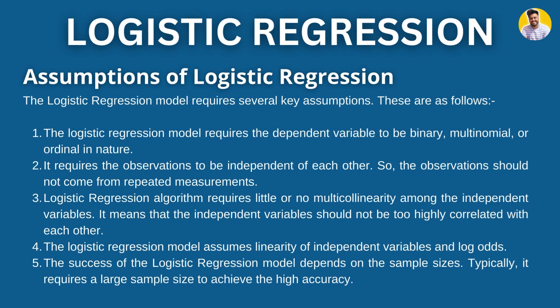What are the assumptions of logistic regression? We also know the assumptions of linear regression, and they can be very similar. Logistic regression requires the dependent variable to be binary, multinomial, or ordinal in nature. It requires the observations to be independent of each other, so there should be no multicollinearity. Logistic regression also assumes linearity of independent variables and the log-odds. Its success depends on sample size — it requires a very large sample size to achieve high accuracy. These assumptions are similar to linear regression, but the difference is in the dependent variable: linear regression has a continuous dependent variable, whereas logistic regression has a discrete dependent variable.